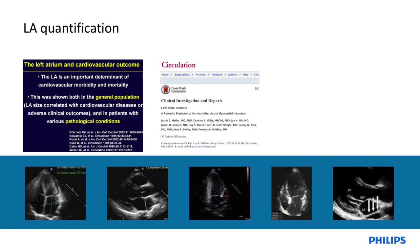Even more than left ventricular function, the LA is also a very important chamber. Diastolic function and a very important marker of ventricular robustness comes from markers of LA quantification. The literature shows definitively that LA size is an important determinant of cardiovascular morbidity and mortality, and it's commonly used in echo labs that keep abreast of the latest literature.